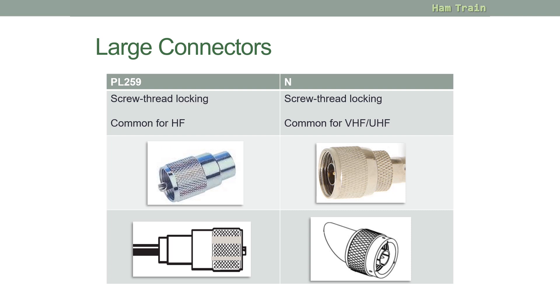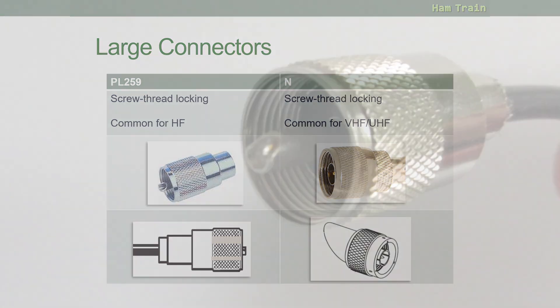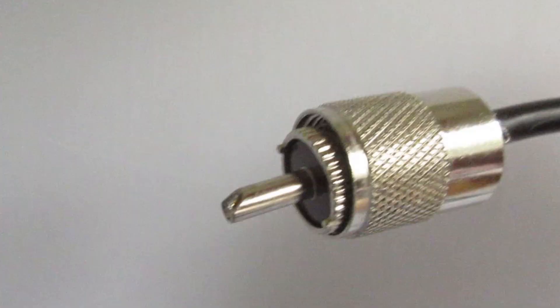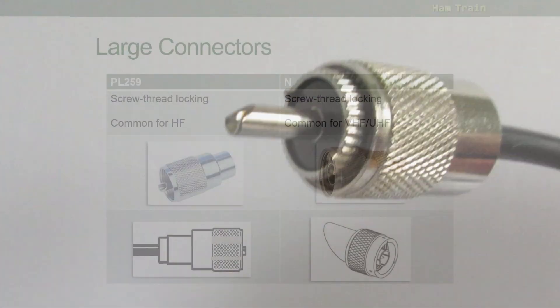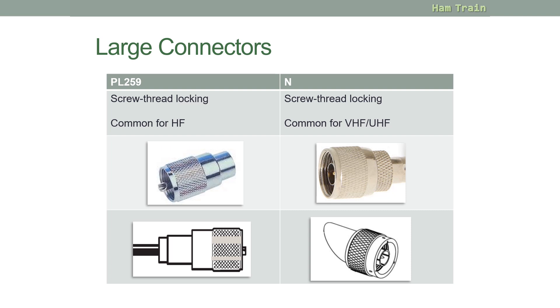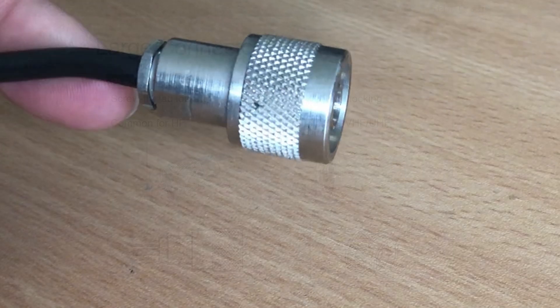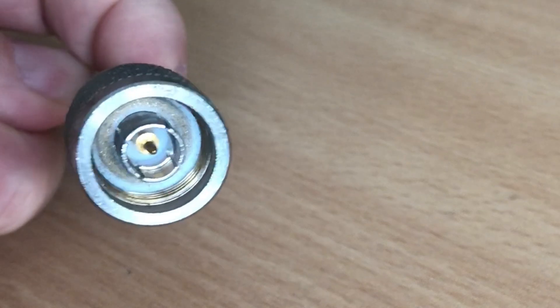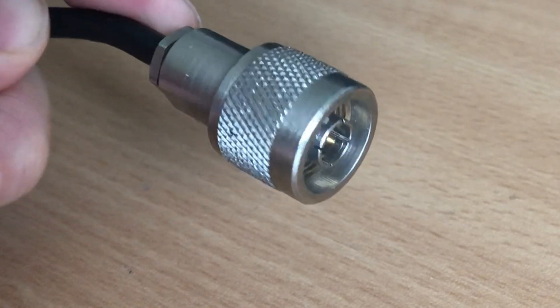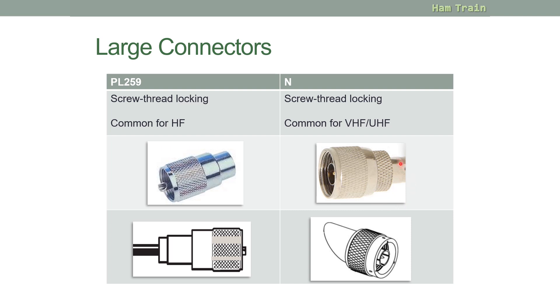Let's look at the larger of the four connectors first. On the left we have the PL259. This is a screw thread locking connector. You can see the screw thread there with the center that contains the signal. This is commonly used for HF. This is a picture of a PL259 plug and the line drawing that you may see in the exam. On the right there is the N plug, which is a screw thread locking plug as well. Slightly different you'll notice here. This is a picture of an N connector and the line drawing that you might see in the exam.